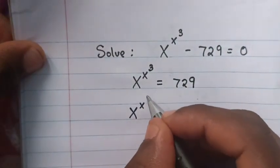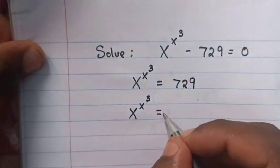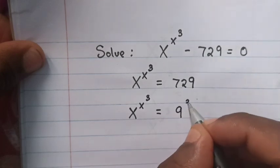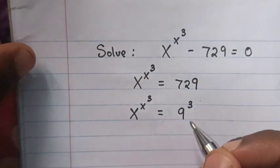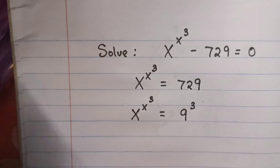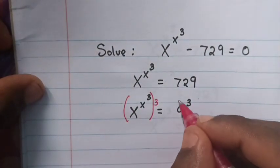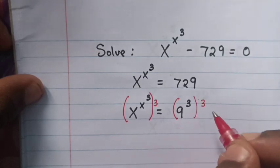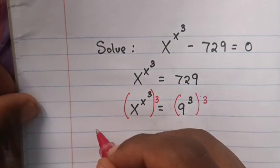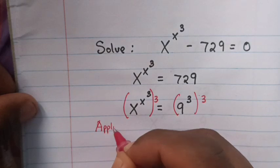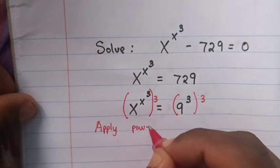So x power x power 3 equals 9 power 3. 9 times 9 times 9 is 729. Then we multiply by power of 3 in both sides and apply the power rule.